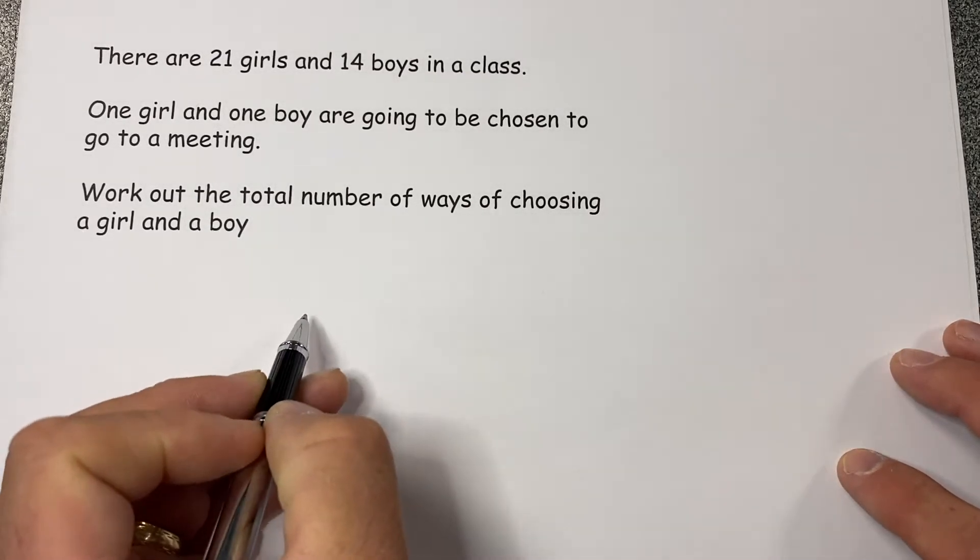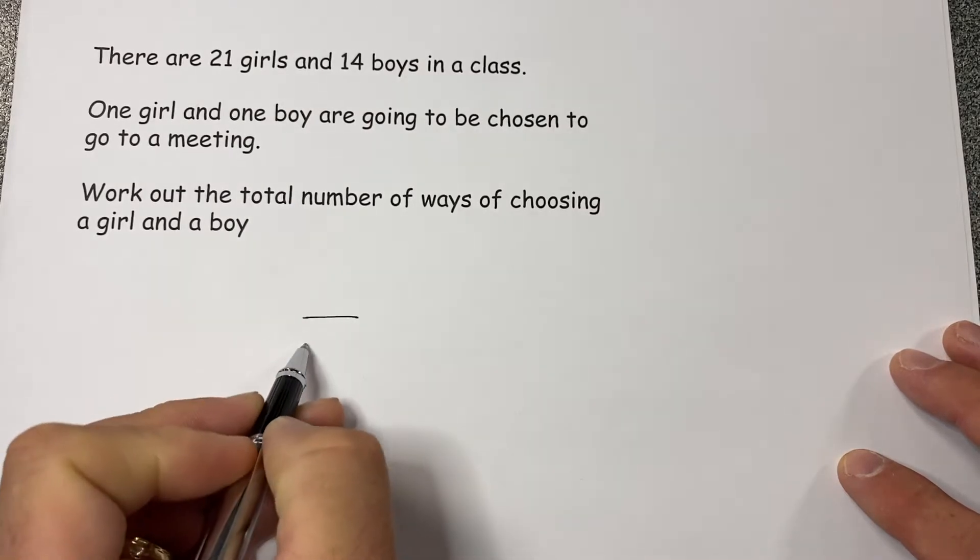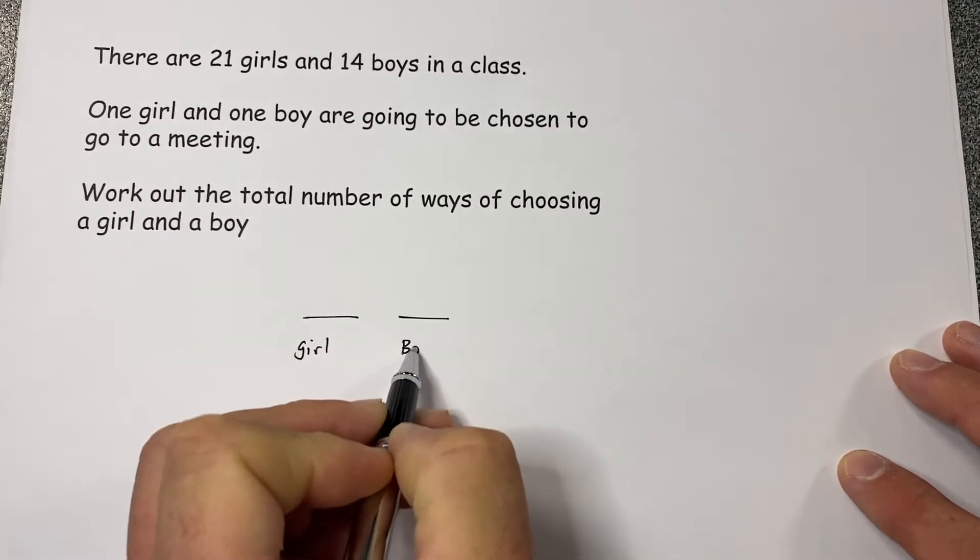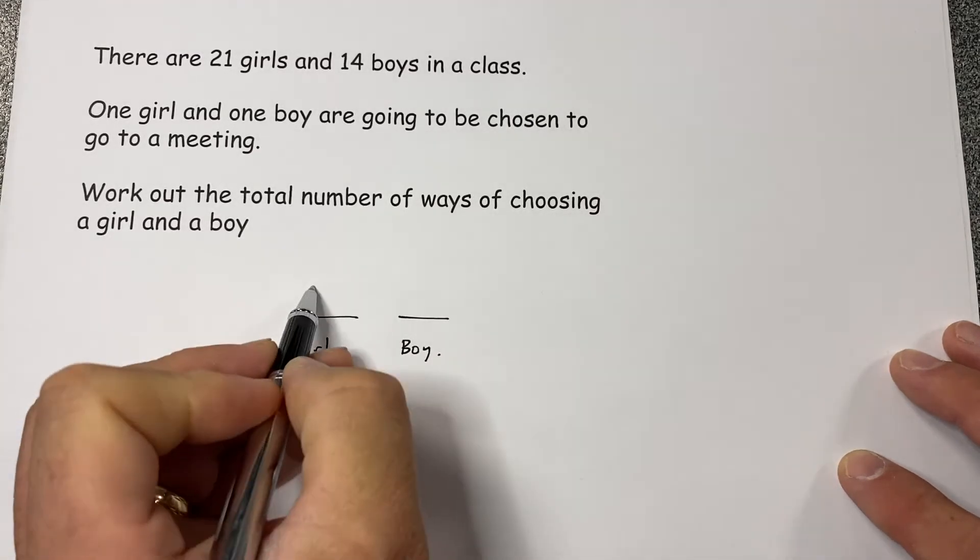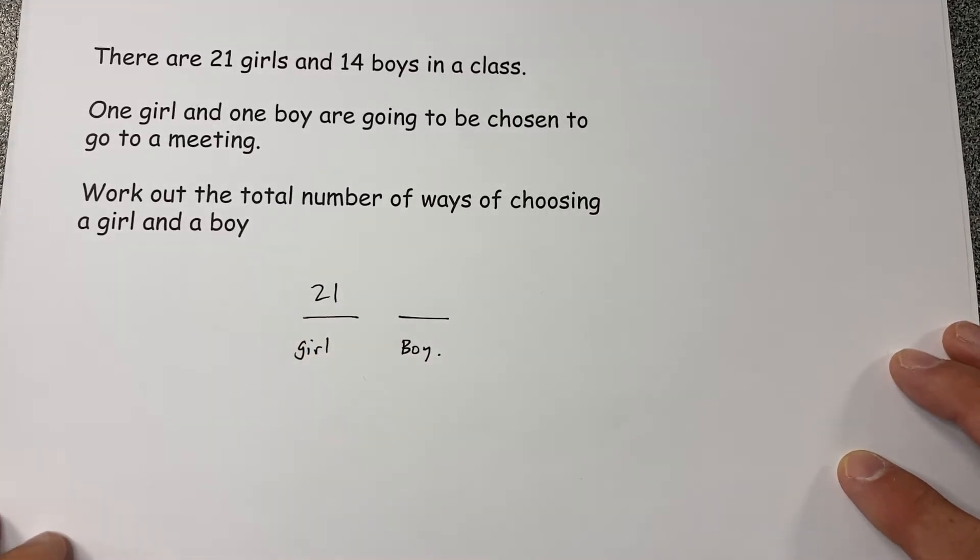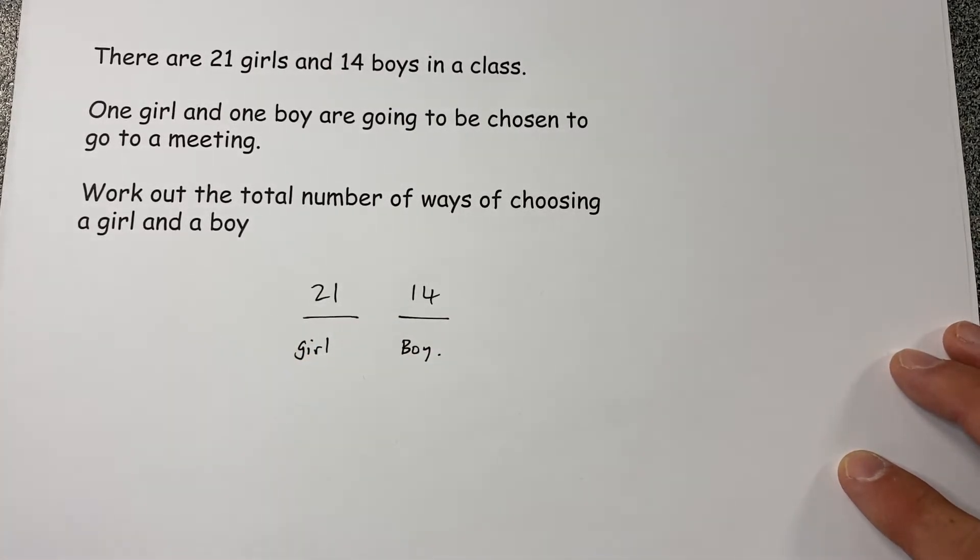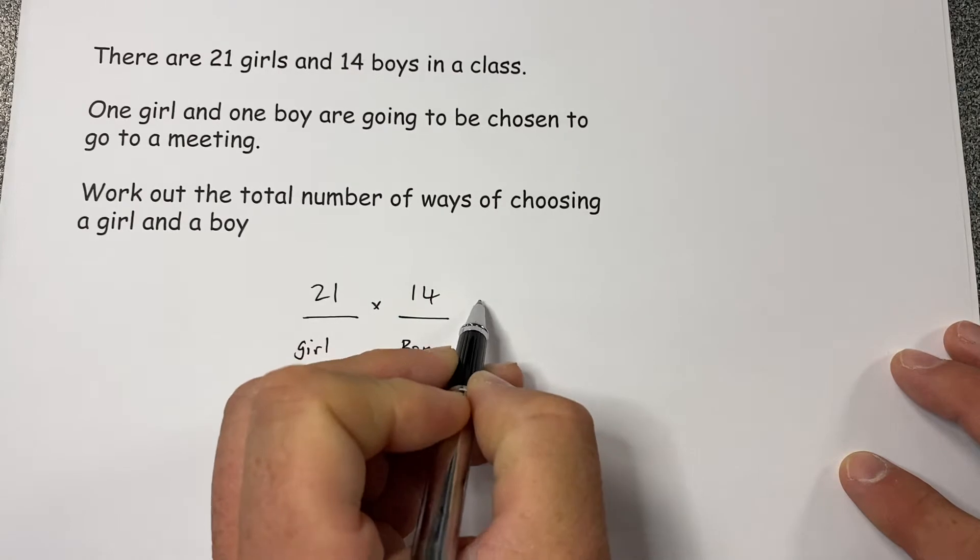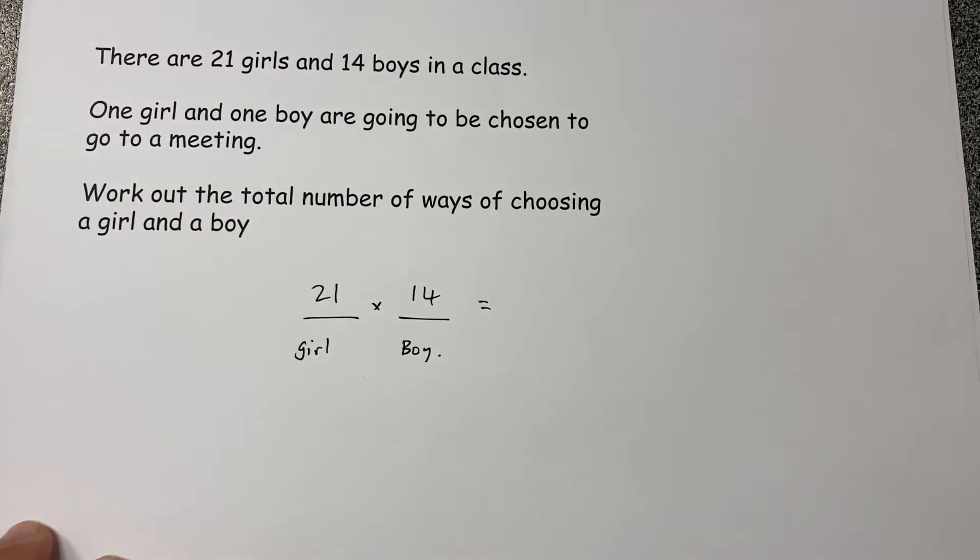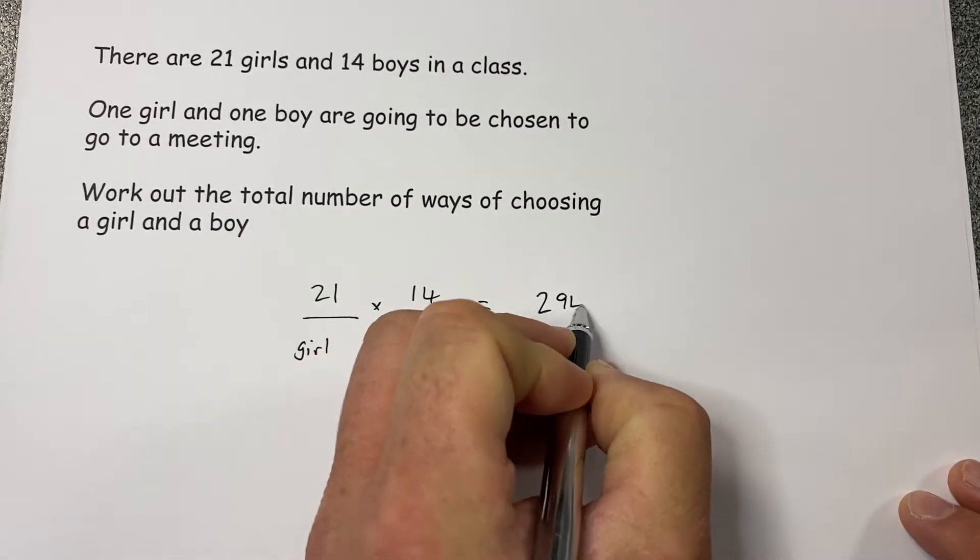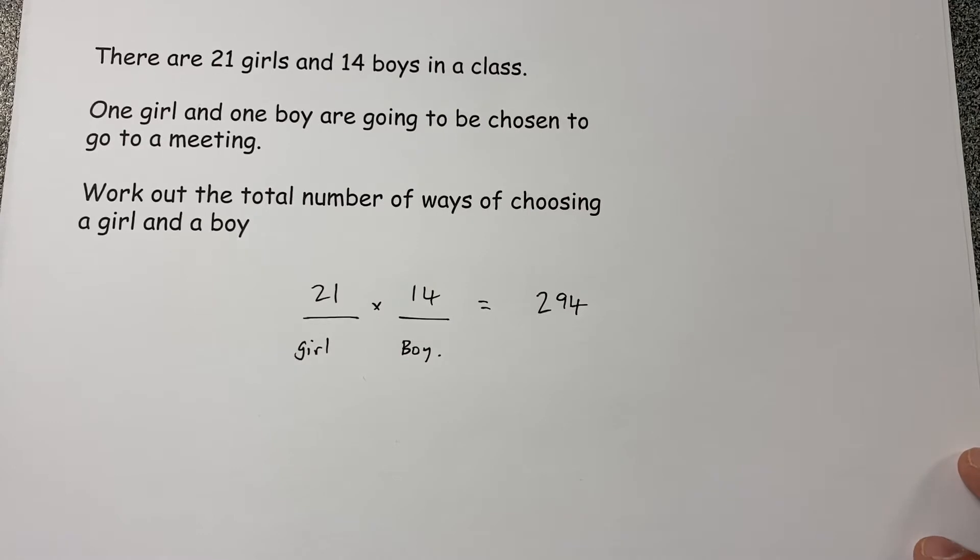Okay, so we are selecting one girl and we're selecting one boy. There are 21 options for the girl selected. There are 14 options for the boy selected, so therefore the total number of combinations is 21 times 14, which on the calculator is 294. And that's how combinations is done.